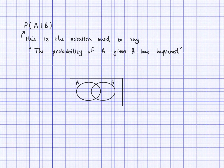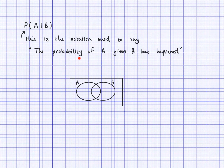In this video, I'll be talking about the formula for conditional probability. Before we do that, I want to help you understand what conditional probability is. We have P(A|B) — this is read as the probability of A given B. This is the notation used to say the probability of A given B has happened.